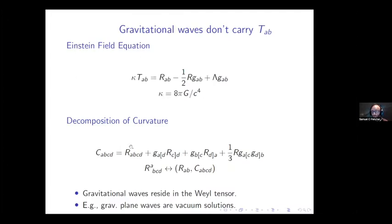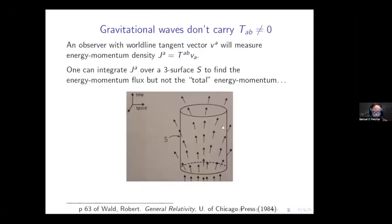If gravitational waves are passing through vacuum regions — regions where the Ricci tensor also vanishes because they reside in the Weyl tensor — then they're passing through regions with vanishing energy and momentum. This energy and momentum is the energy and momentum that matter has, so on the face of it, gravitational waves themselves have no energy and momentum associated with them. We can draw the more direct conclusion that the energy and momentum associated with gravitational waves is zero.